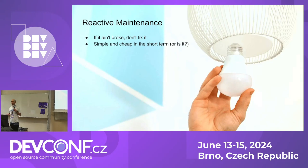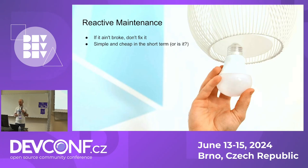But what about software? What happens if the system goes down for a minute — how much will that cost us? Take the hyperscalers, for example. How much does a downtime of an AWS region cost Amazon, Google, or Facebook? We're talking about millions of dollars a minute. That's very expensive.